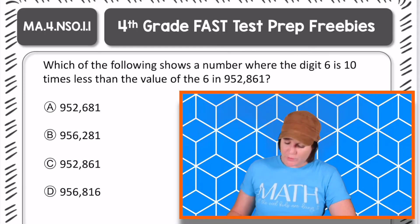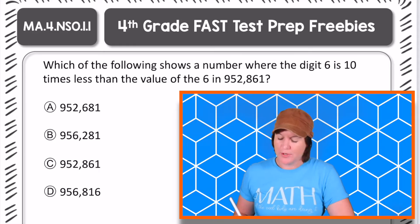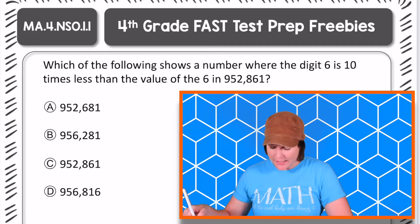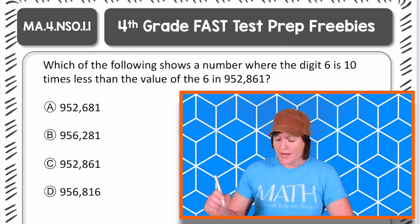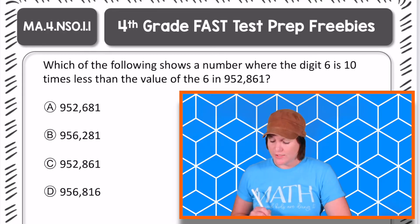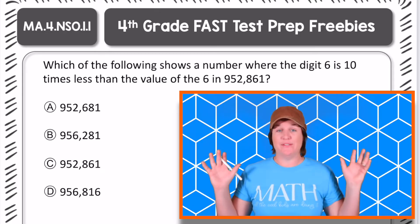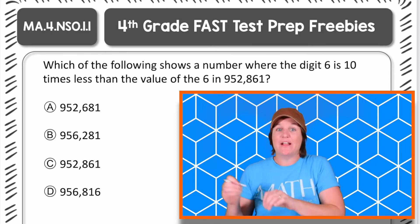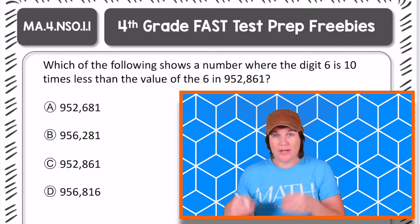All right everybody, here is our fourth grade problem for today. Which of the following shows a number where the digit 6 is 10 times less than the value of the 6 in the number 952,861? That was a lot for my brain. That was the first read. I'm definitely going to take a closer look at this problem and not just jump in, but I'm going to take a closer look and annotate the text to mark it up and break it down.